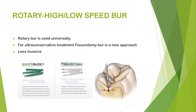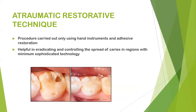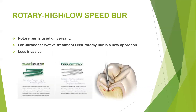Rotary bur is used universally because it easily cuts through carious dentin. However, while cutting through carious dentin it also opens healthy tubules, often resulting in sensitivity or pain. For ultra-conservative treatment, there is a bur called the fissurotomy bur, which is a new and less invasive approach. Micro-STF and Micro-NTF burs are designed specifically for pit and fissure lesions.